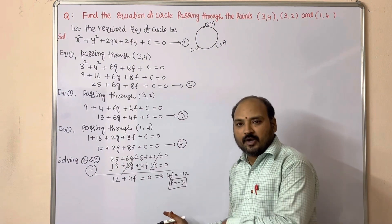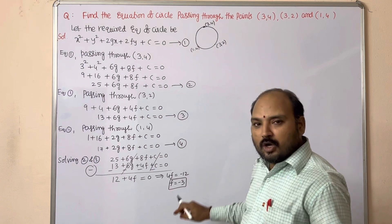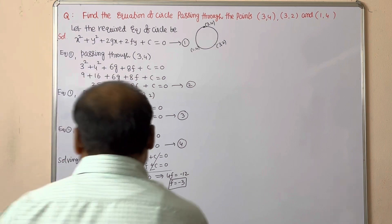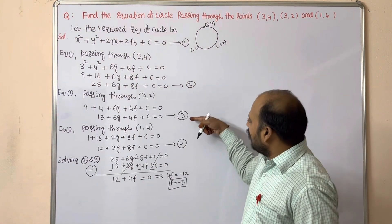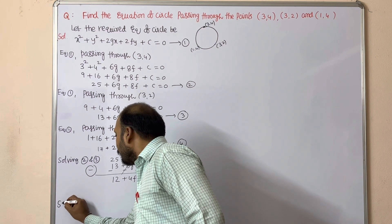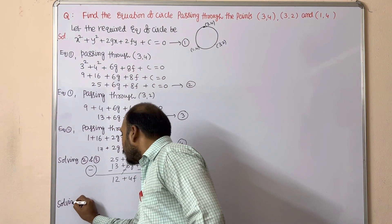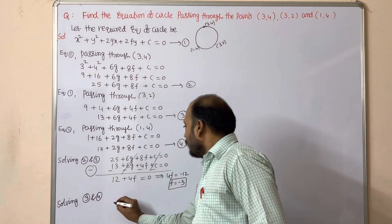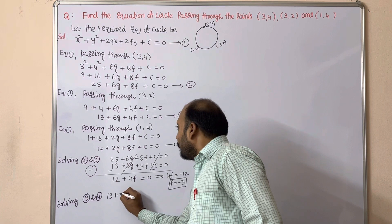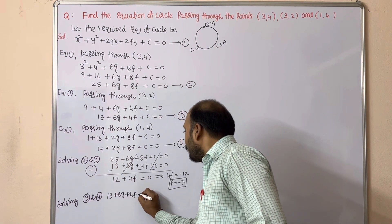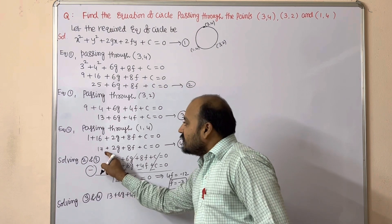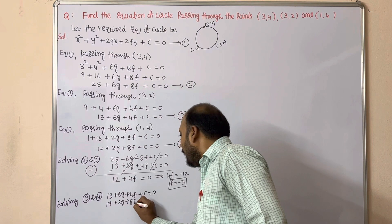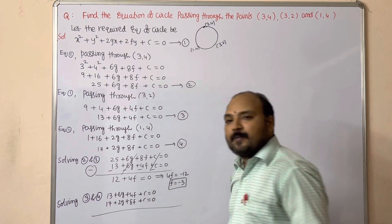Now solving Equation 3 and Equation 4. Equation 3 is 13 + 6g + 4f + c = 0, and Equation 4 is 17 + 2g + 8f + c = 0. We subtract Equation 4 from Equation 3 to eliminate c.